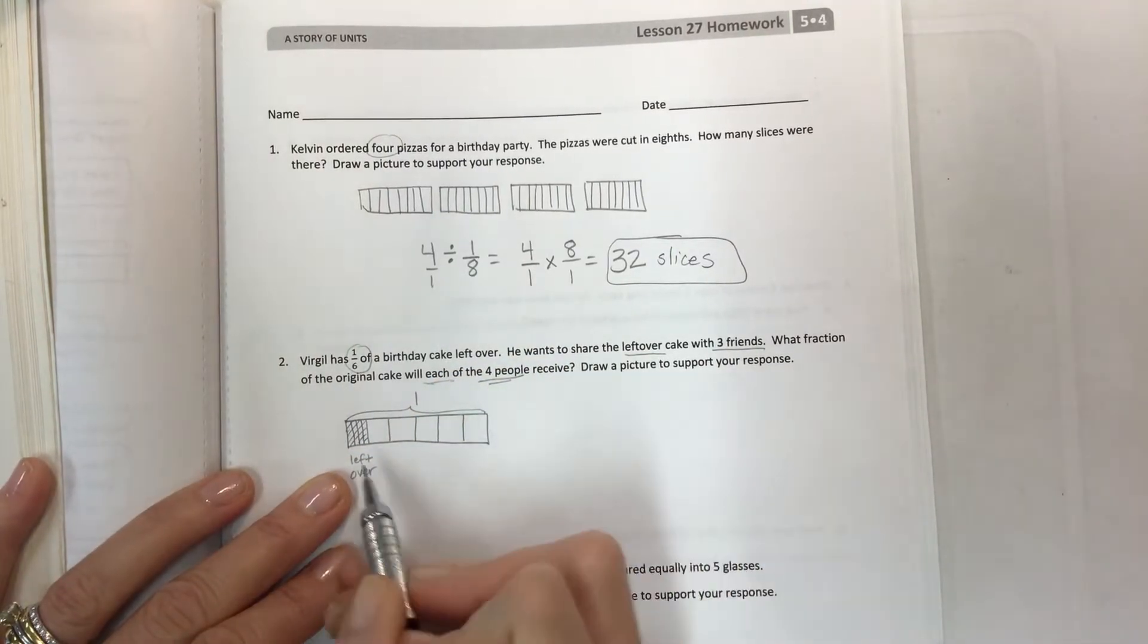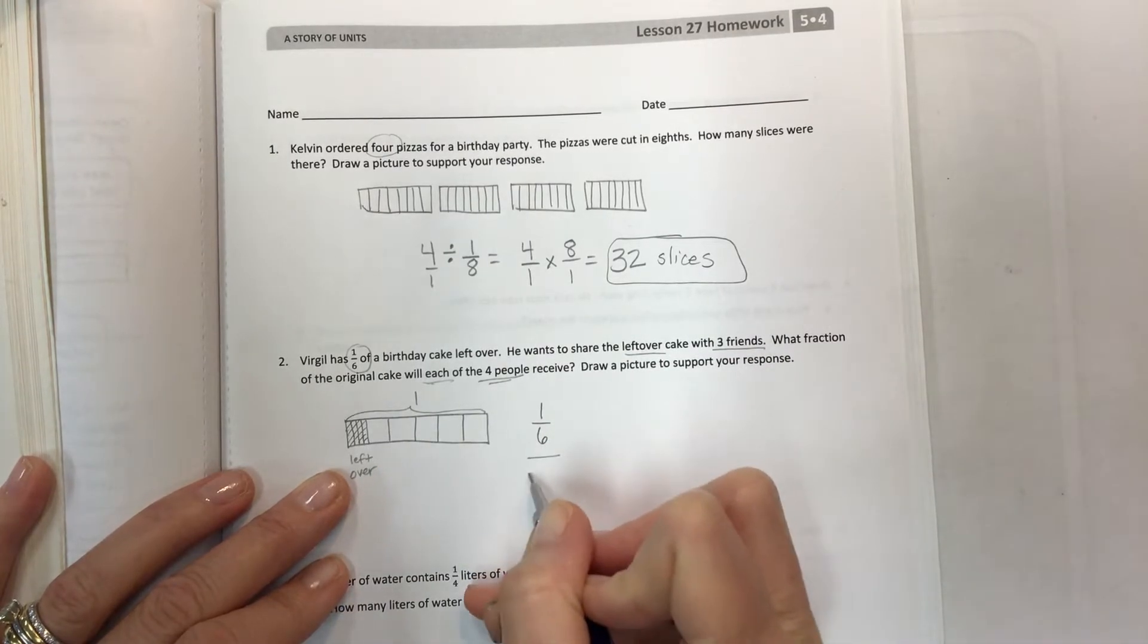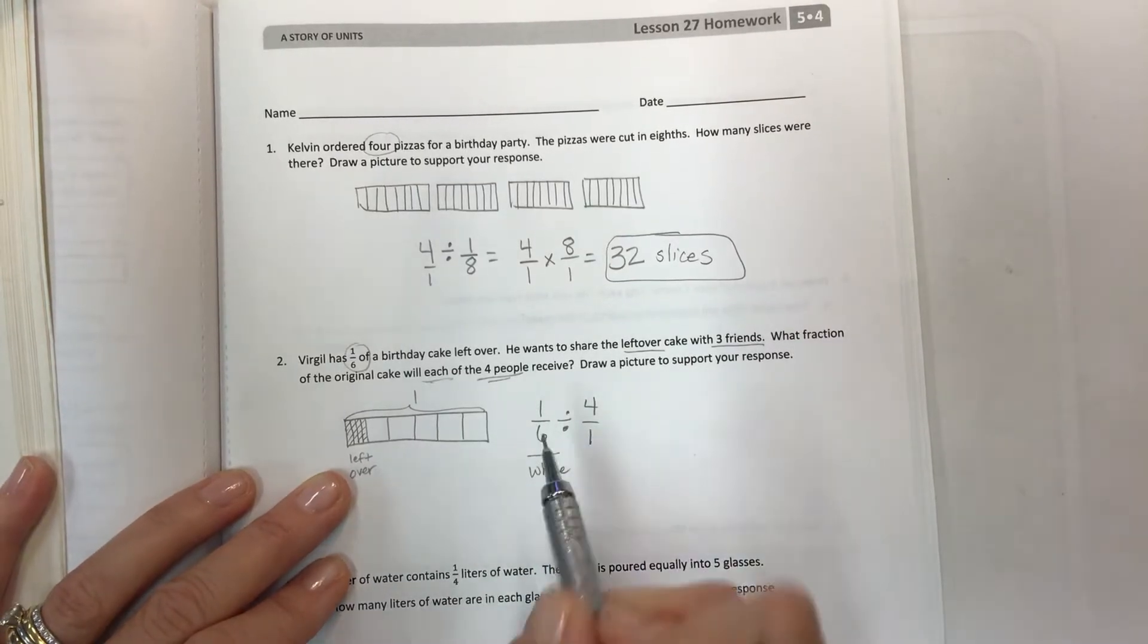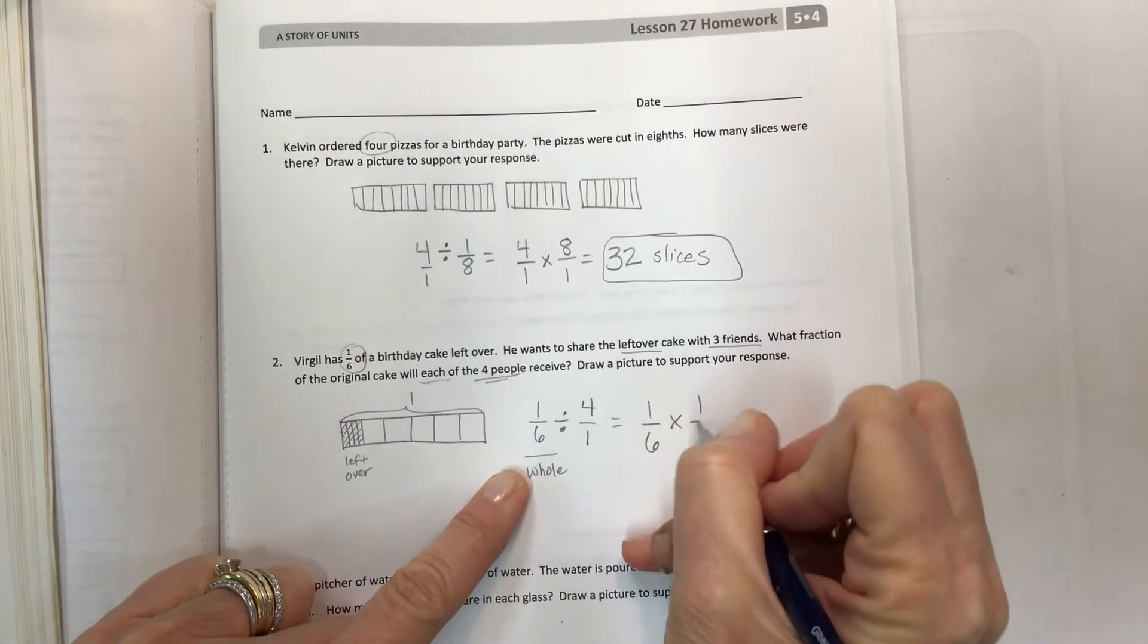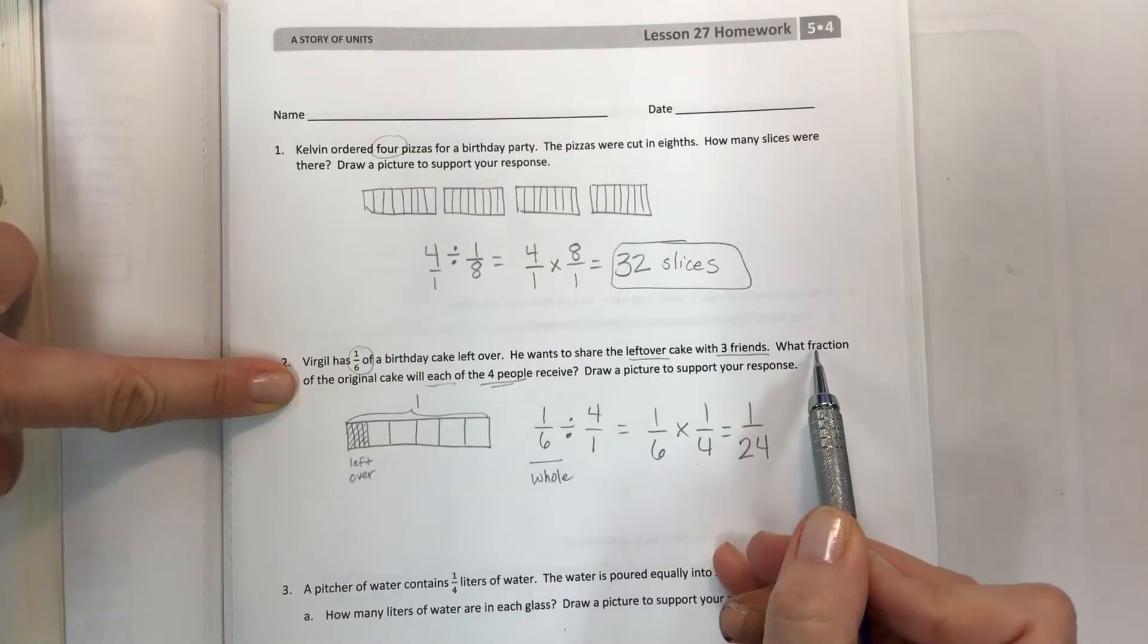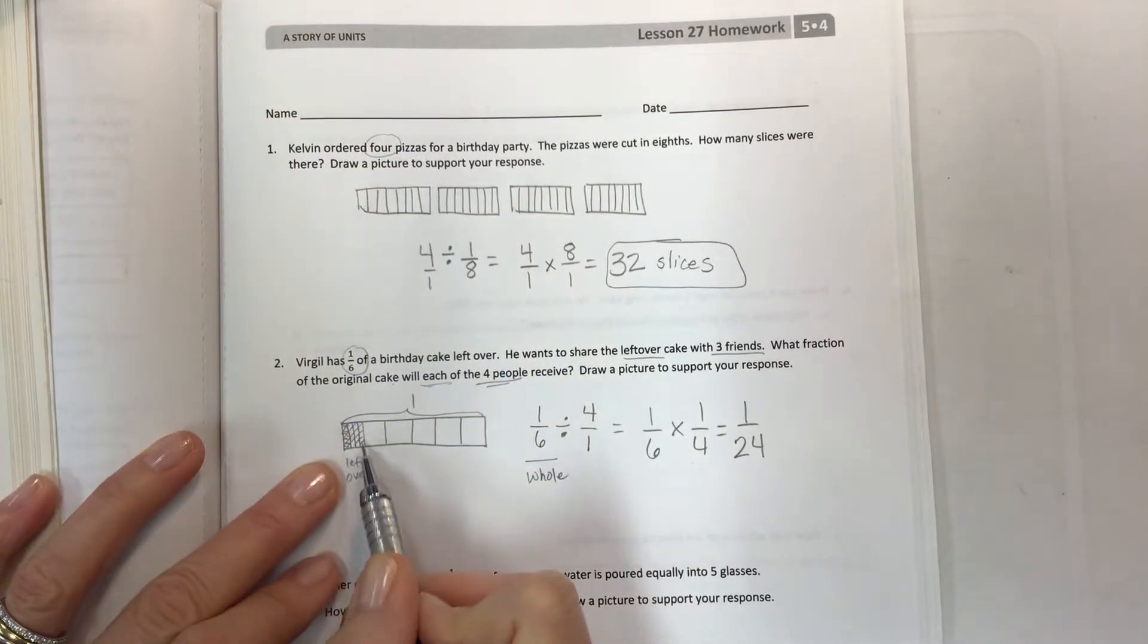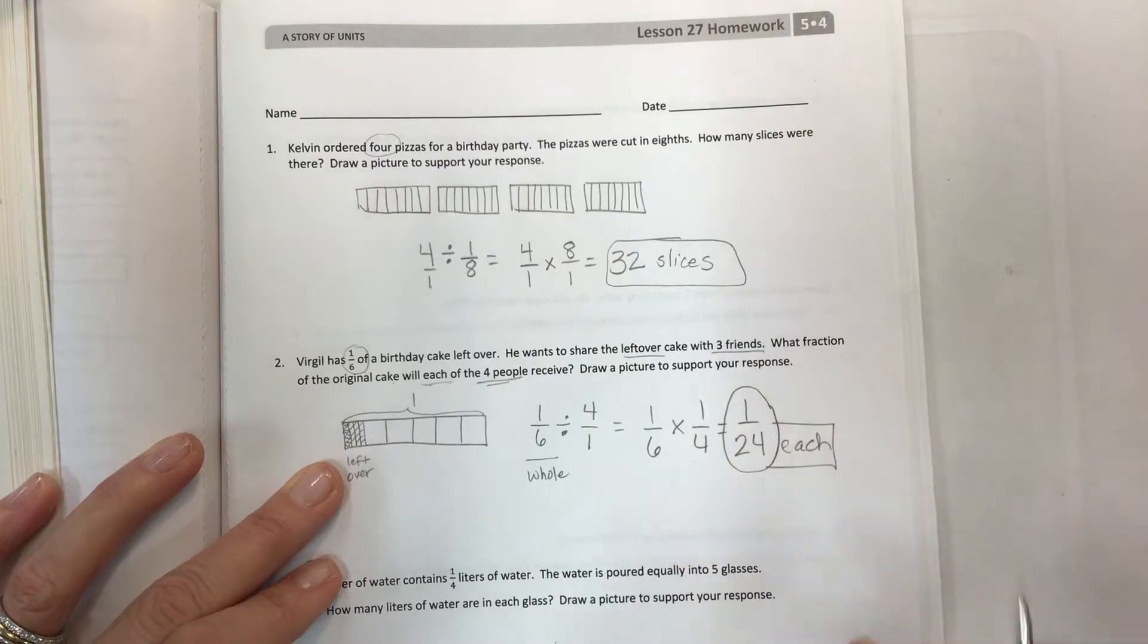He wants to share the leftover cake with the three friends, which makes four people. So draw a picture like this and then show your math. You only have one-sixth. That is the whole. Remember the whole comes first. And this is being shared by the four people. Four whole people. That looks like four over one. So hopefully you set it up like this. Now once you have your first or initial expression, keep, change the sign, flip, so that you get one twenty-fourth. And that is the answer to what fraction of the original cake will each of the four people receive?